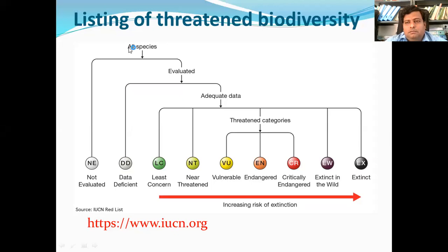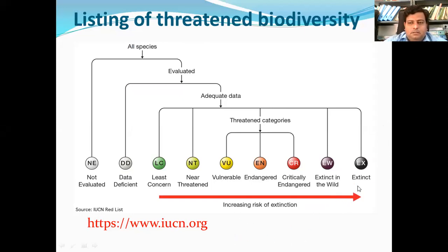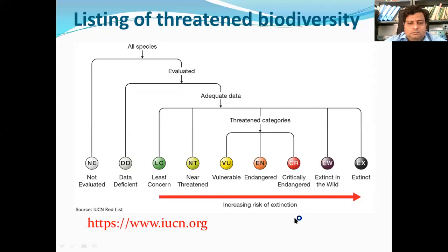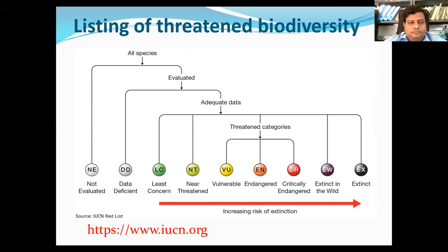Good afternoon, students. Today we will be seeing the listing of threatened biodiversity — how it is done and who does it. As you can see here, there is a T-diagram given, showing all species that have been evaluated and not evaluated. We will go into further details about who does it.